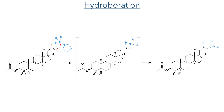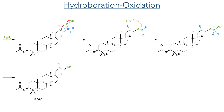The newly generated alkene was then subject to hydroboration. Borane-THF complex undergoes a concerted addition to the alkene, adding a hydride to the more substituted end and leaving the boron group on the terminal position. Hydrogen peroxide then attacks this boron, forming a borate that undergoes a rearrangement, forming a carbon-oxygen bond together with the elimination of hydroxide. This hydroxide then attacks the boron to once again form a borate that can be hydrolyzed upon workup to form an alcohol in a 59% yield.